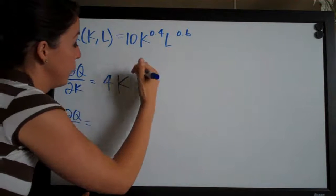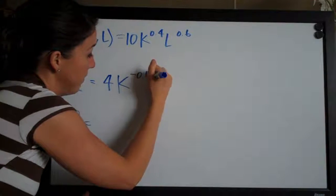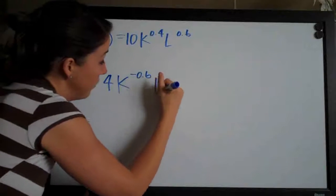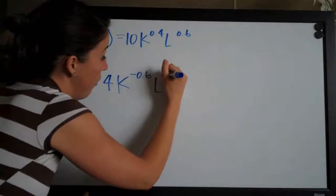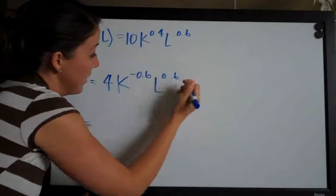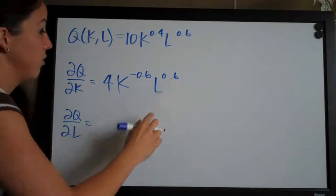0.4 minus 1 is negative 0.6 and then the l we leave alone because remember it was absorbed into the coefficient when we treat it like a constant. So it's just l to the 0.6 there.